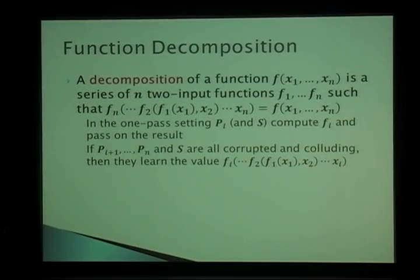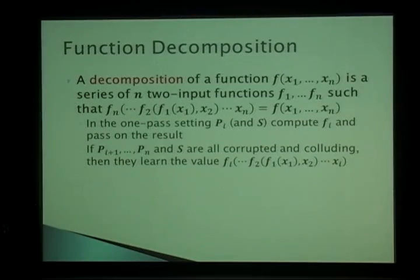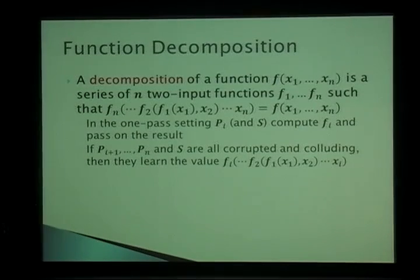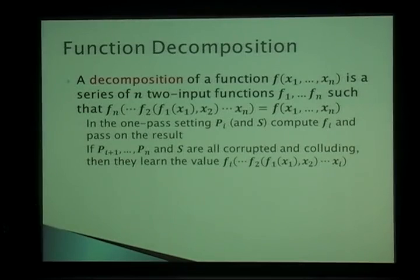This leads us to function decomposition: a series of N two-input functions that together compute the final function. You first compute F1 on the first input, then F2 on that result and the second input, and so on. In the one-pass setting, P_i and server S are actually computing the i-th function F_i in this decomposition series. If the last N minus i parties and the server are all corrupted and colluding, they learn the output of that i-th function. So function decomposition and residual functions are inherent to the one-pass model.